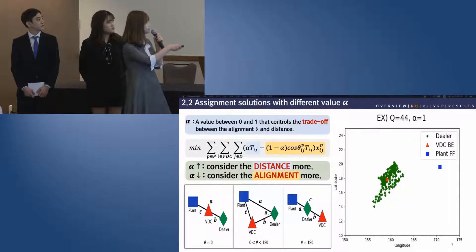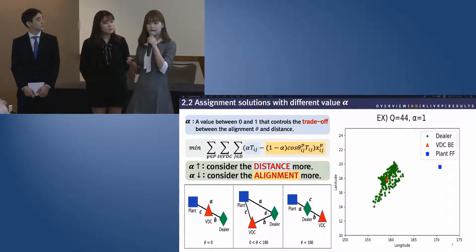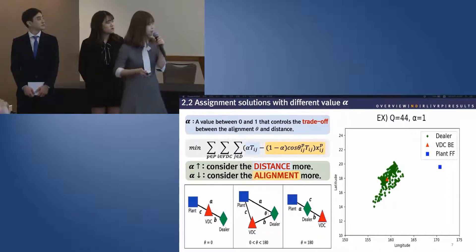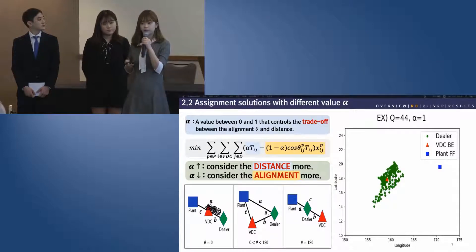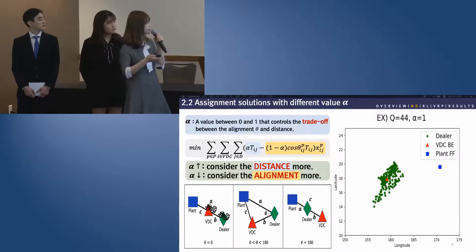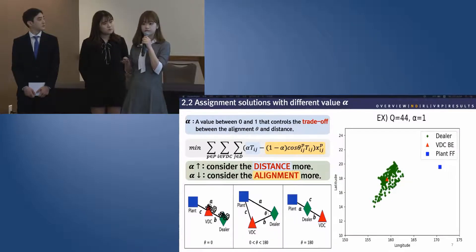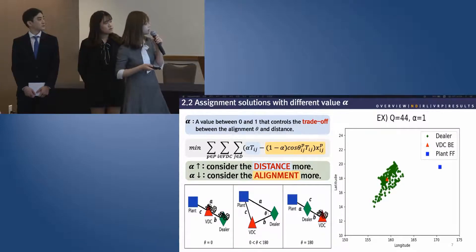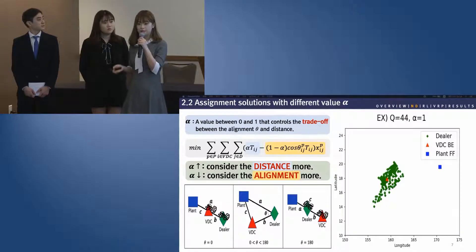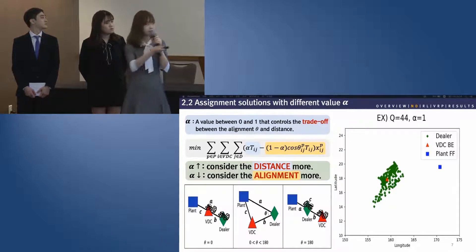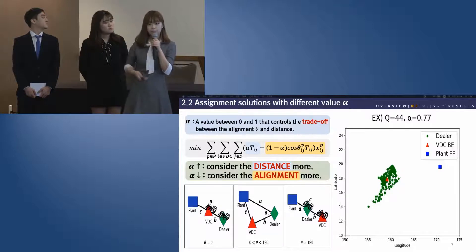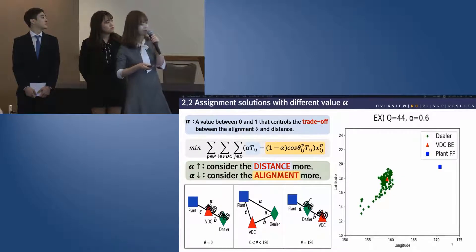Let's take a look at this figure. It illustrates why the assignment can reduce the transportation cost. It is ideal in terms of transportation cost for the plant, VDC, and dealer to be in a straight line. However, if only the distance between VDC and dealer is considered, the transportation distance can increase. This is why we consider distance and alignment together using alpha. Smaller alpha puts more emphasis on good alignment. The animation shows the trade-off between distance and alignment with different alpha values.